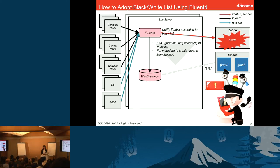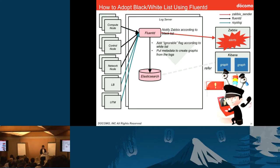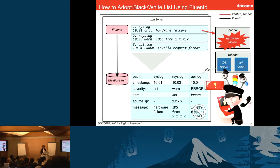Let me explain our architecture for log processing adopting blacklist and whitelist. FluentD on every node sends logs to the log servers. Some devices that cannot have FluentD installed send logs via rsyslog. Rules of the blacklist and whitelist are contained in FluentD configuration. FluentD sends logs to Zabbix following the blacklist, and raises a flag for ignorable logs following the whitelist. FluentD also puts metadata to logs to create graphs. Logs are then stored in Elasticsearch, and Kibana shows graphs by referring to Elasticsearch records.